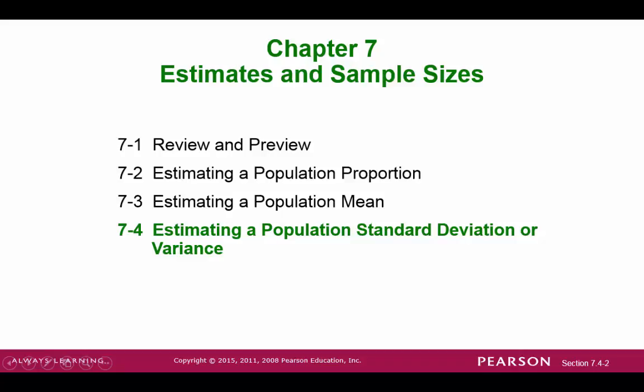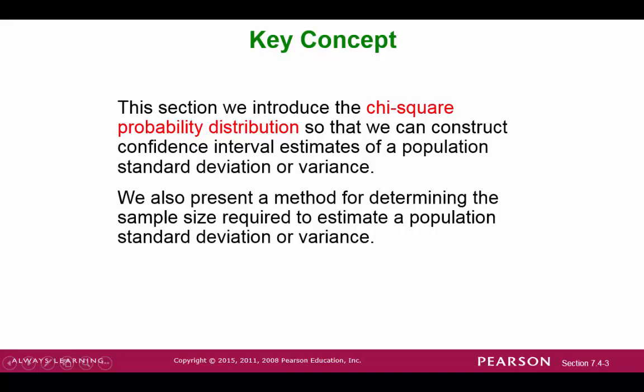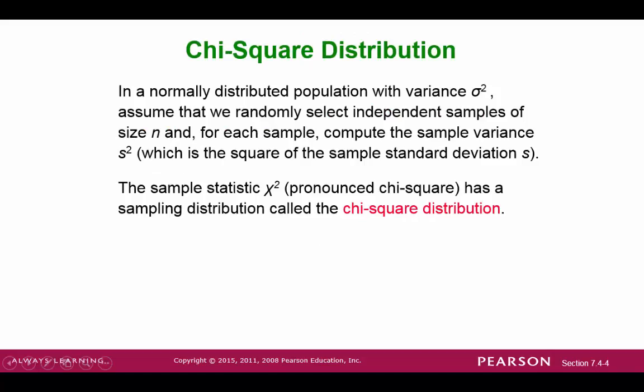Section 7-4: Estimating a Population Standard Deviation or Variance. The main idea here is to introduce the chi-square distribution so that we can make confidence intervals to estimate the population standard deviation. Chi is a Greek letter, and the distribution is named after chi-square. It is key that we look at a normally distributed population to be able to estimate the standard deviation or variance.